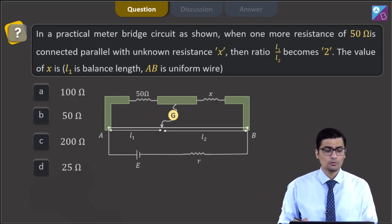The four options are 100 ohms, 50 ohms, 200 ohms, and 25 ohms, and the diagram is given as in front of you.